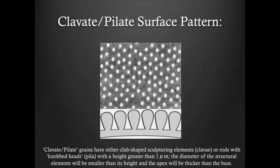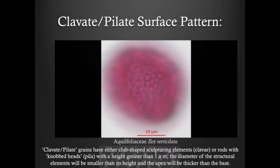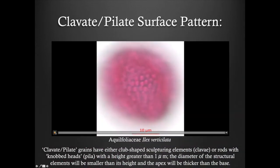Clavate or baculate grains have either club-shaped or rod-shaped sculpturing elements with knobbed heads, with a height greater than one micrometer. The diameter of the structure will be smaller than its height and the apex will be thicker than the base.